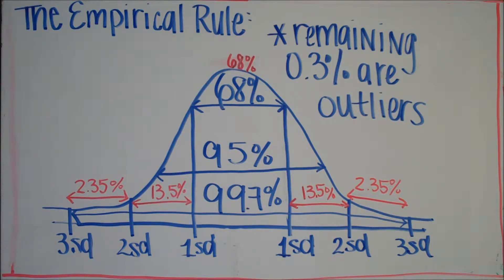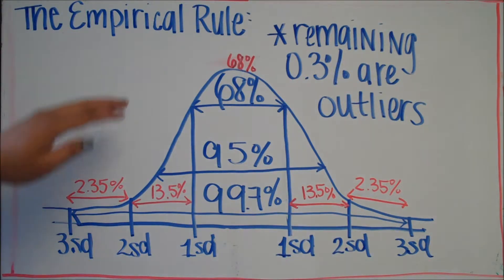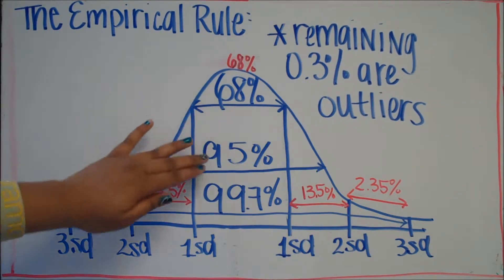We're going to be talking about the empirical rule. The empirical rule is associated with this bell curve. Always remember that the area underneath the bell curve is either 1 or 100%. As you can tell, this bell curve is broken up into three different percentages.